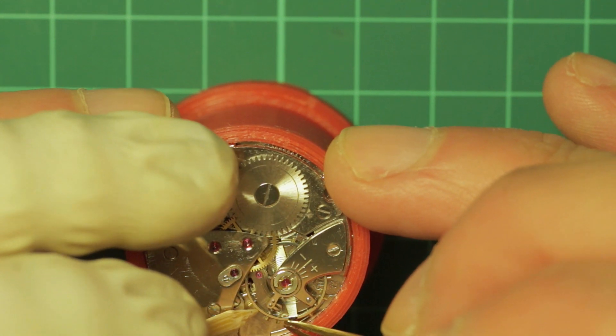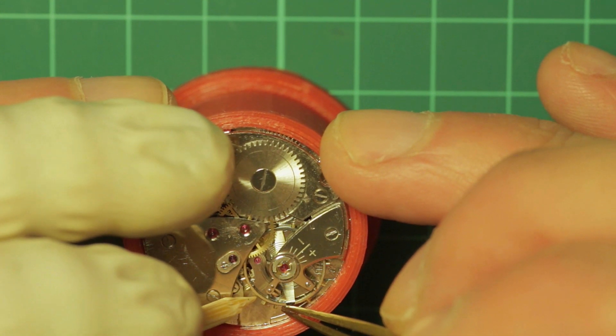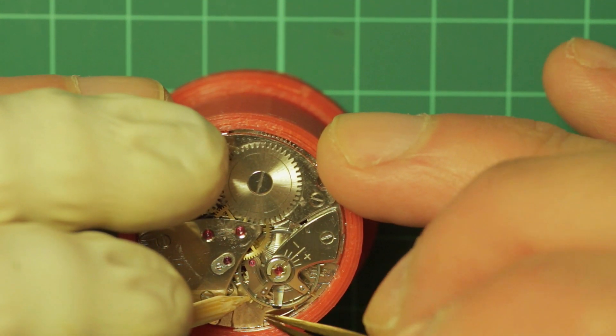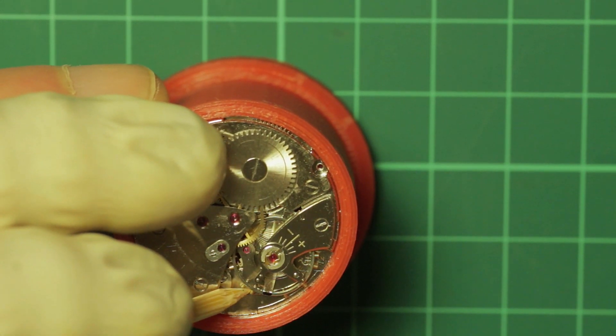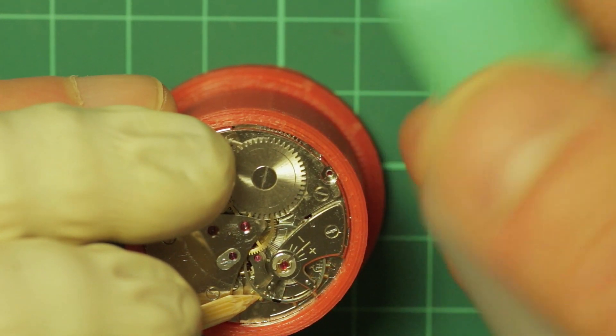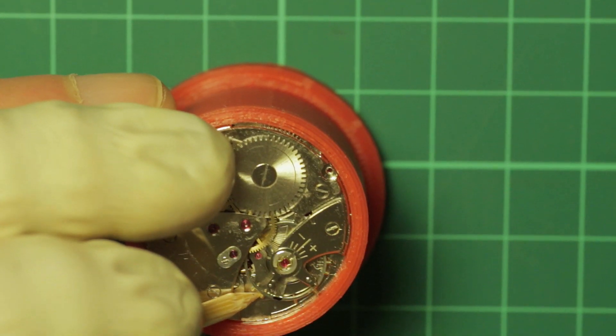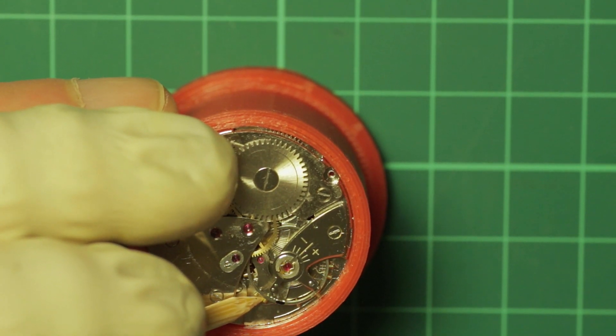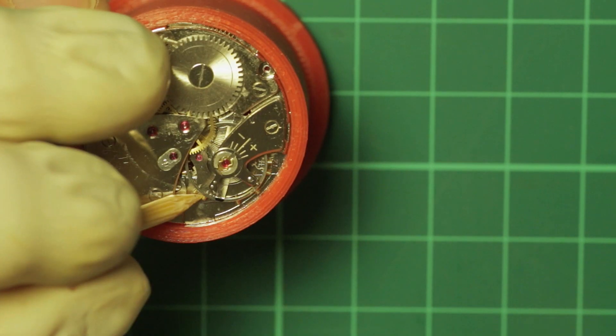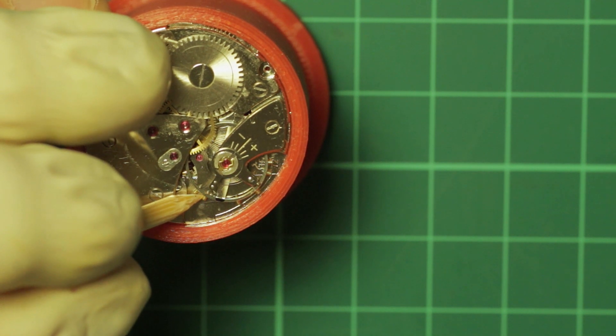And then I have a little squeeze bottle down here of isopropyl alcohol. This gets used for all manner of watch-related things and also for my model making. And then I'm just going to put a few drops onto this little spiral of tissue that I've created.